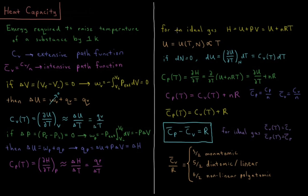Moving on to the ideal gas: enthalpy is defined in general as H = U + PV. For an ideal gas, PV equals NRT, so the enthalpy of an ideal gas is H = U + NRT.